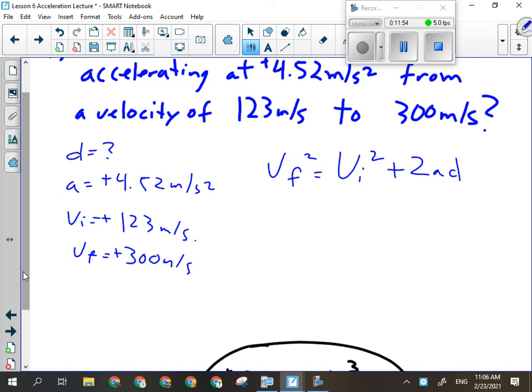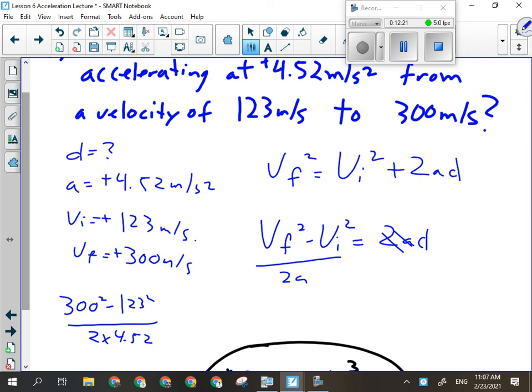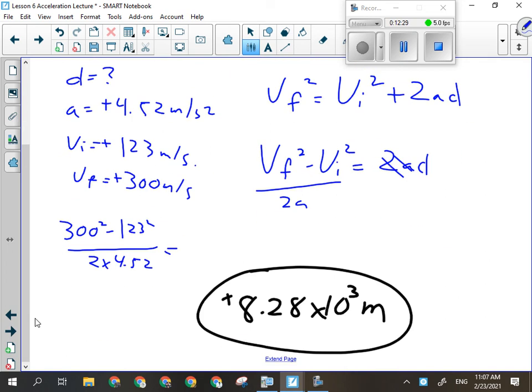So I'm looking here now to solve for the distance traveled. I'm going to first subtract VI squared over to the other side. And then I'm going to divide both sides by 2A in order to get D by itself. So when I'm plugging in my numbers here, that's going to be 300 squared minus 123 squared divided by 2 times 4.52. And that should give me my overall distance, which is 8.28 times 10 to the 3 meters. That's like over 8 kilometers. Does that answer make sense within the context of the question? It does. You could have put 8.28 kilometers if you wanted to.